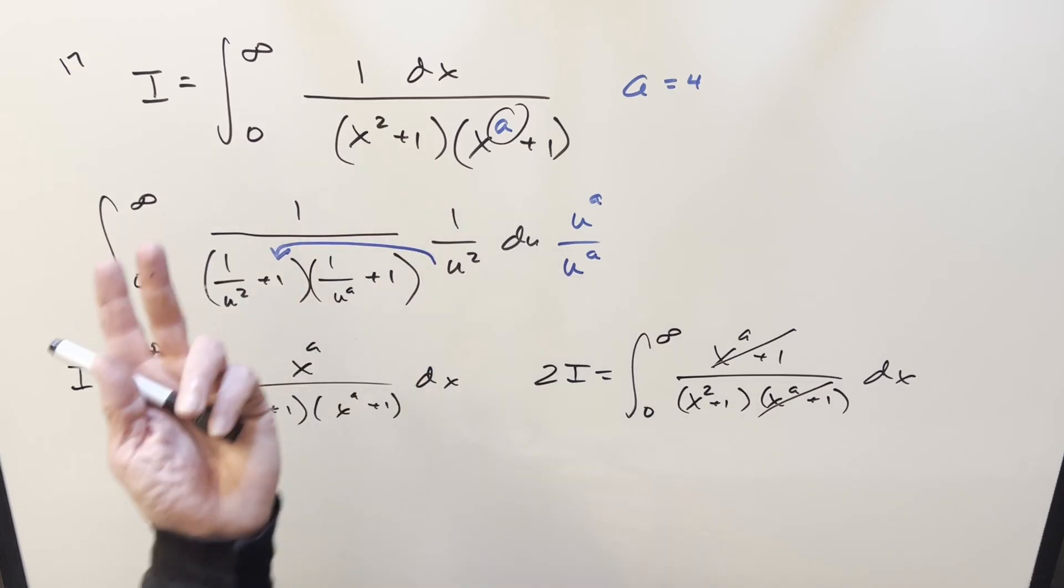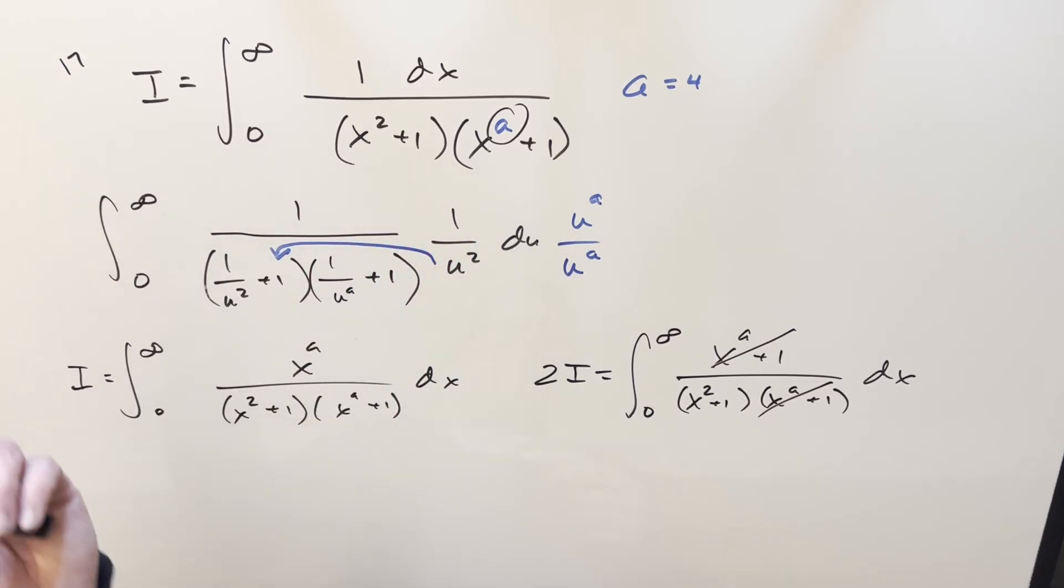And now that I look at it, I guess it could be anything, right? I think zero works, negative numbers. There's nothing that's going to cause a convergence problem that I can see. So I think any a works. I don't know, I didn't think about it. But yeah, it looks like any a is going to work on this.